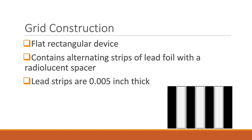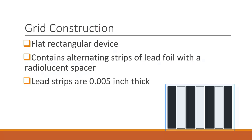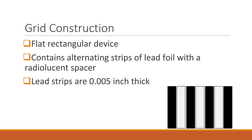A grid is a flat rectangular device that contains thin lead foil strips and radiolucent spacers. The lead strips are 0.005 inches thick, or 5 thousandths of an inch thick. The lead strips and spacers are alternated. Some grids are located inside the table or upright Bucky where you don't see them, while other grids can be attached to a specific size image receptor.